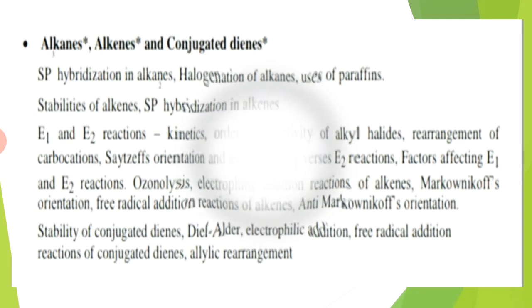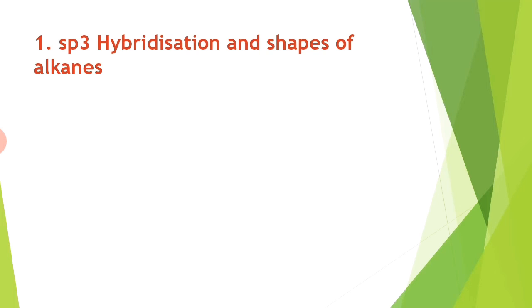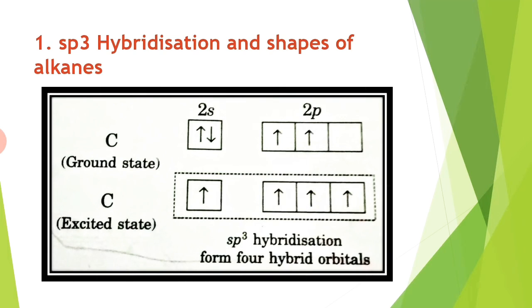Let us see one by one. First, sp3 hybridization and shapes of alkanes. First of all, what do you mean by hybridization? Hybridization means mixing of atomic orbitals into new orbitals which are suitable for pairing of electrons to form the chemical bond in valence bond theory.